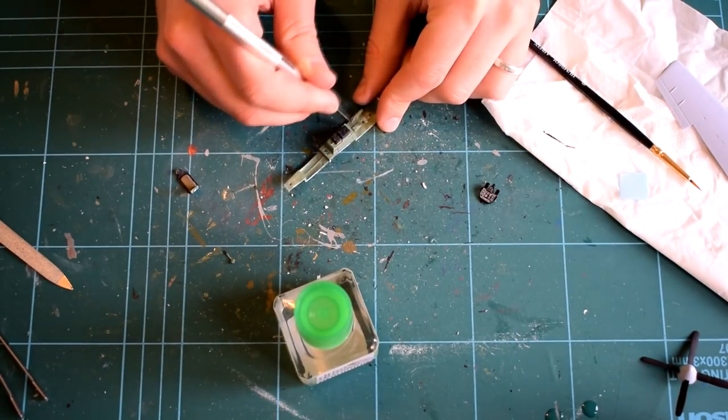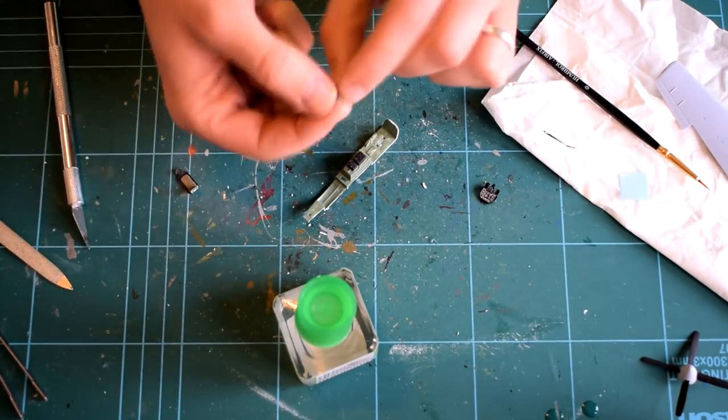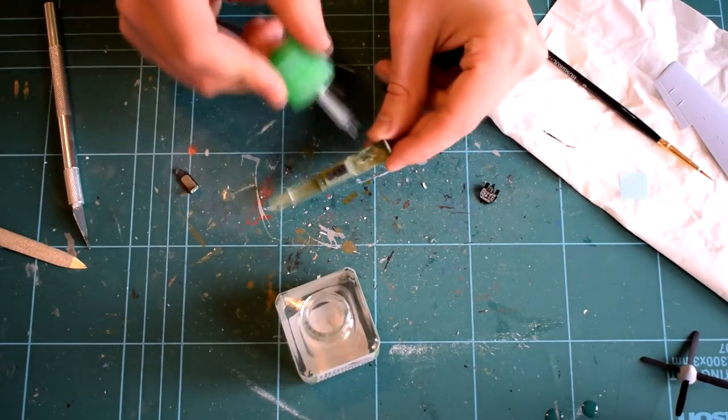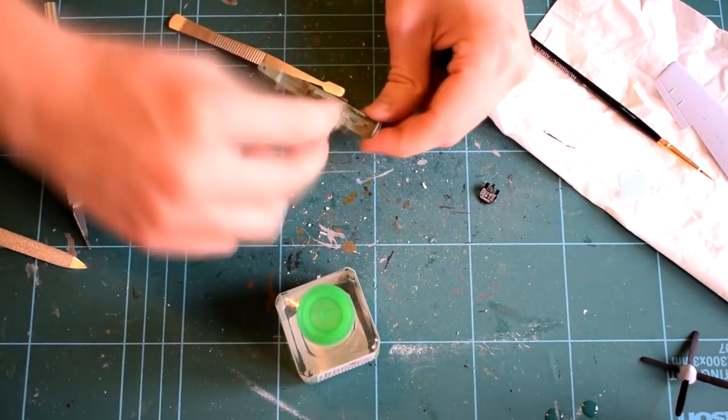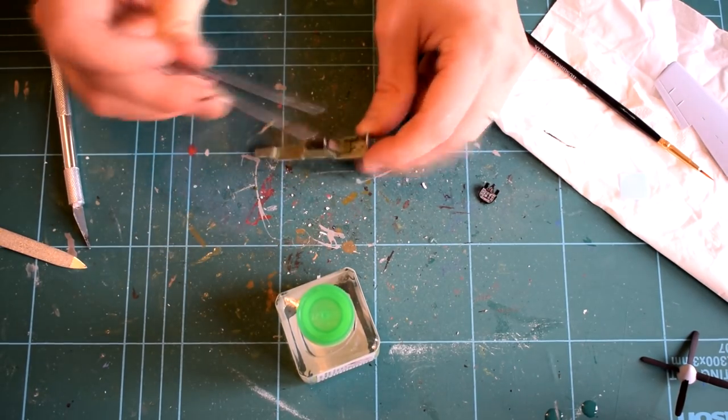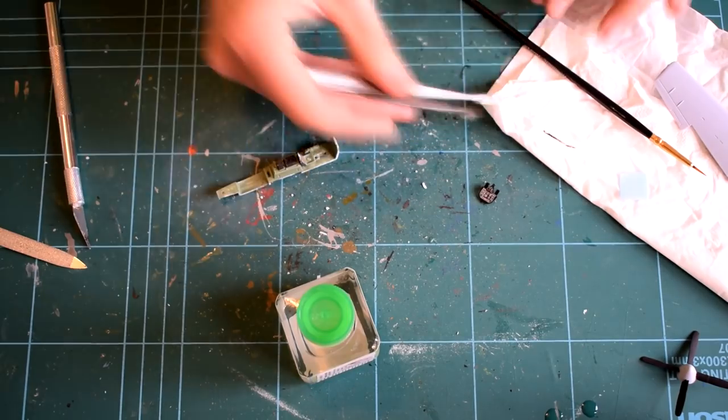The cockpit parts were then cut from the sprues and assembled. Small amounts of paint had to be scraped from the bonding surface, in order to make sure the plastic cemented together correctly. This can be a fiddly step, so some tweezers and patience will be needed here.